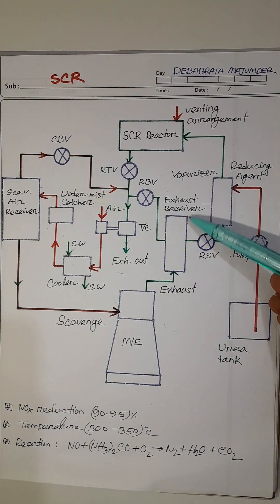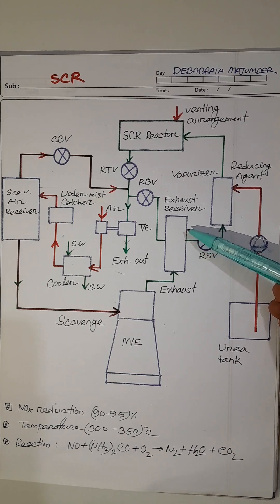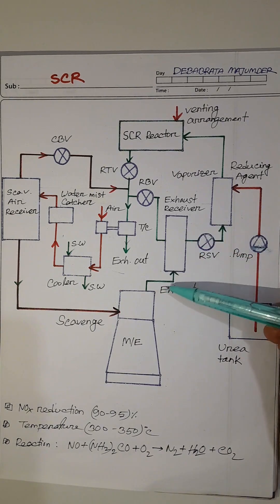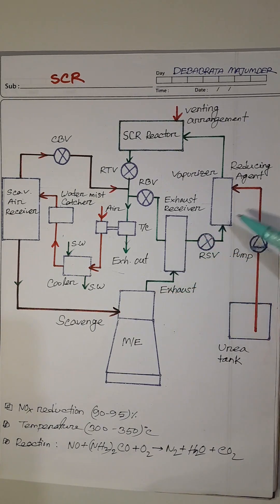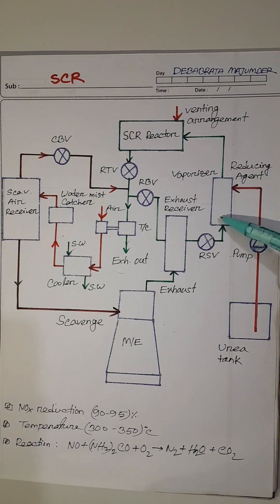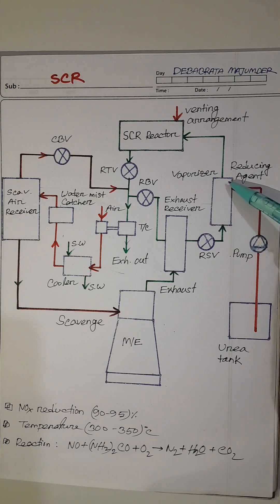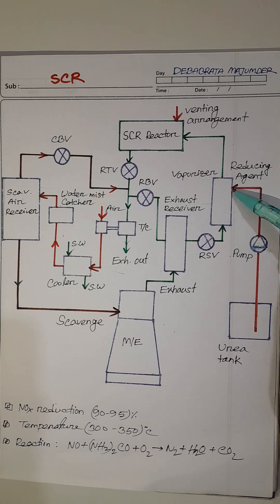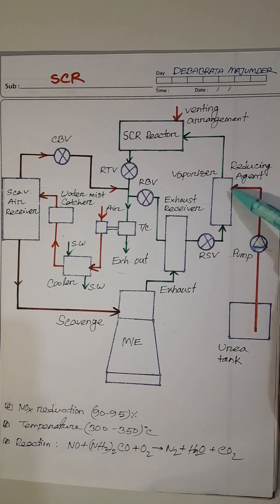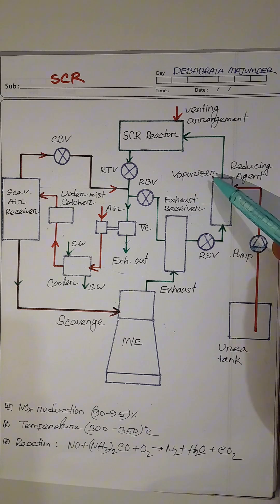This is the exhaust receiver, where exhaust is received from the main engine. This is known as the vaporizer. In this unit, the reducing agent is injected through an injector and the reducing agent is vaporized in this unit. That's why it is called vaporizer.